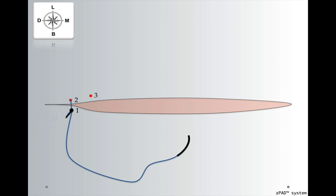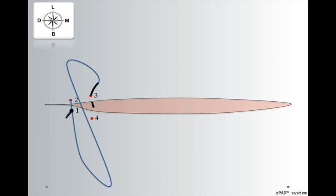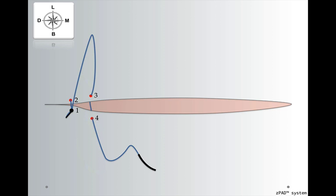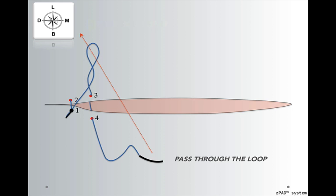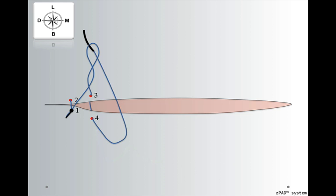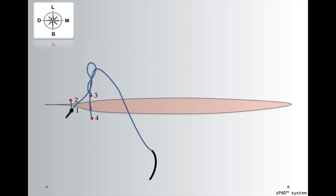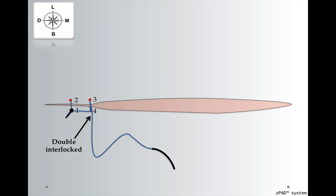What we'll do next: we'll enter through the mesio lingual, exit through the mesio buckle, and then we have a loop that is created. Now in the interlocking suture I showed you in the previous lecture, the needle is being passed through the loop. Now we're going to do this a little bit differently. We'll take the loop and we're going to twist it — once, and then twice. Only then we'll pass the needle through the loop. As we pull the needle and suture material towards the buckle, we're going to create an interlocking — but this time it's going to be double interlocked. It'll be very secure and stable, and that is basically the solution for opening of an interlocking suture.